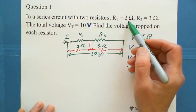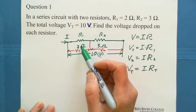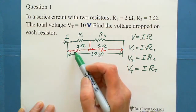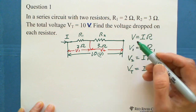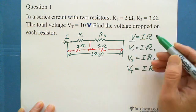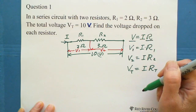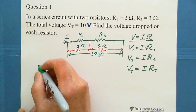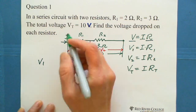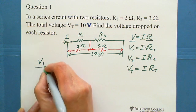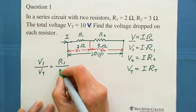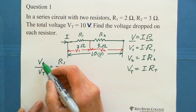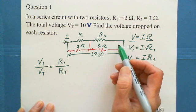So R1 equals 2 ohms and R2 equals 3 ohms — the 2-ohm resistor will have a lower voltage drop than the 3-ohm resistor. How do we use ratio proportion? Because voltage is directly proportional to the resistor in series circuits, we can write V1 over V total equals R1 over R total.